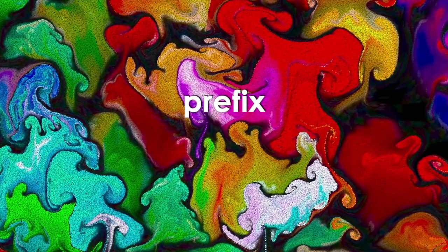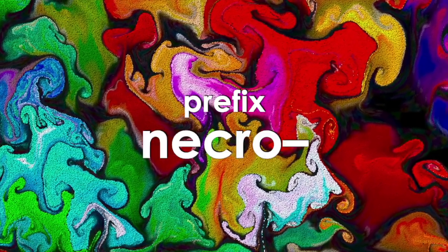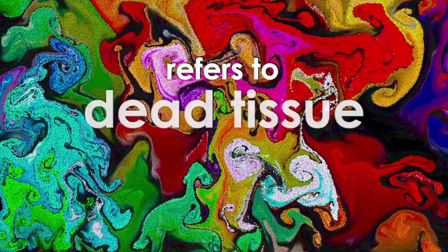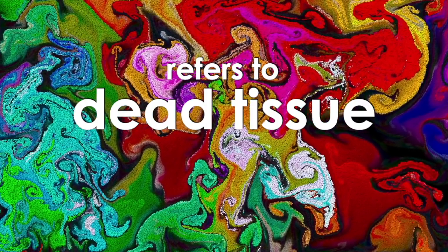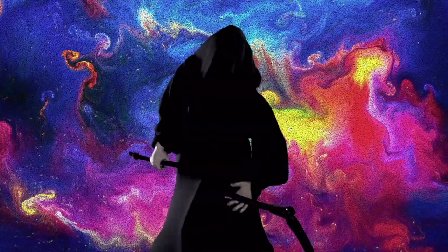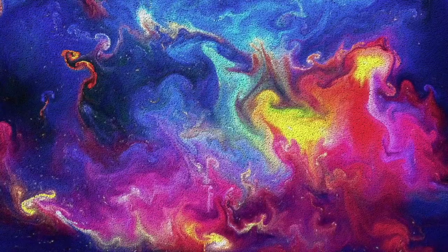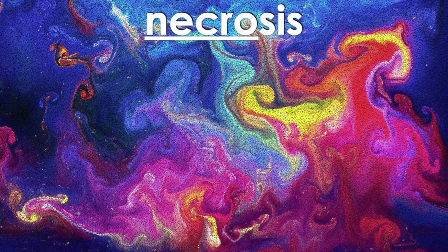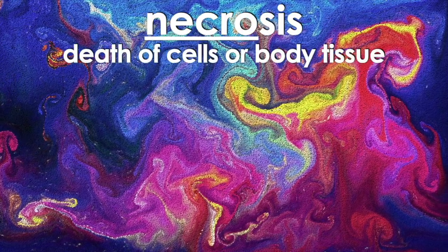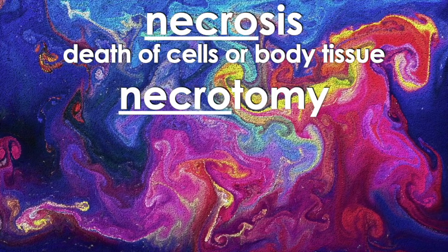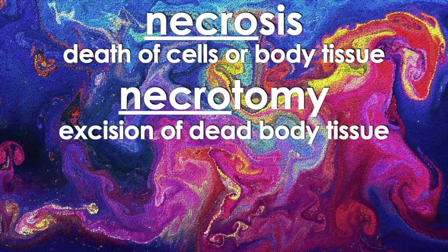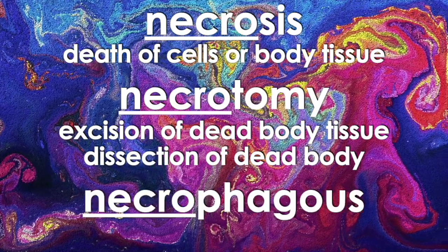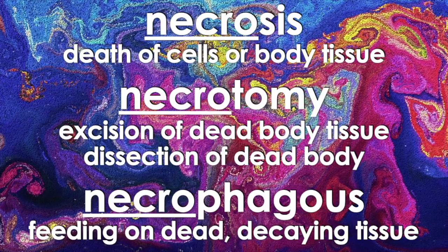The prefix 'necro' refers to dead tissue or the dead. Some examples of words with the prefix necro include necrosis, which is the death of cells or body tissues; necrotomy, which is the excision of dead body tissue or dissection of dead bodies; and necrophage, which is feeding on dead, decaying tissue.